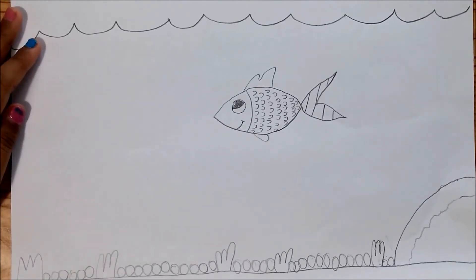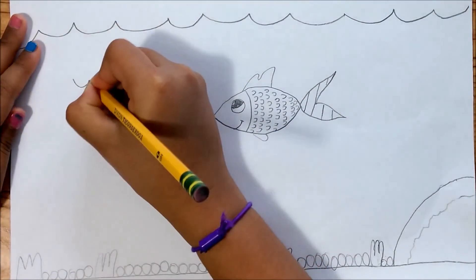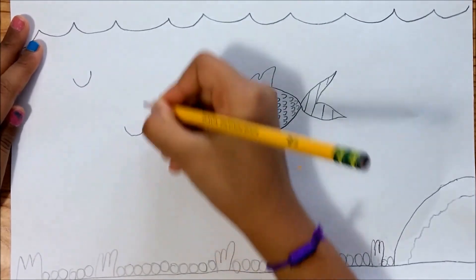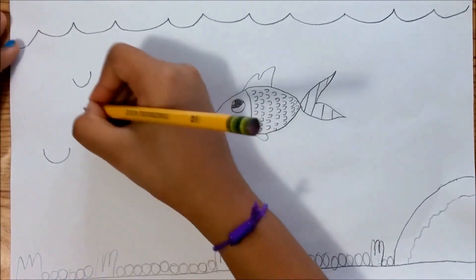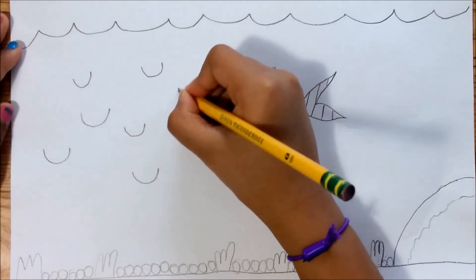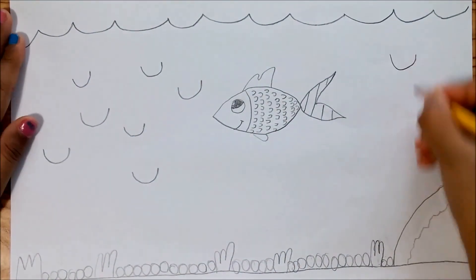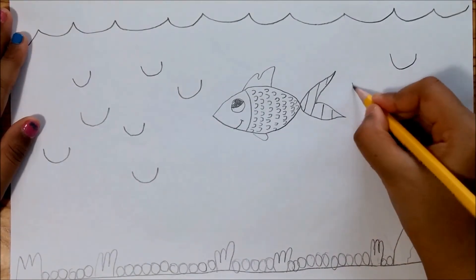Then you can draw these little bumps, like I showed you on my last video, the second tutorial, the mountain scenery, to just show that the ocean is flowing.